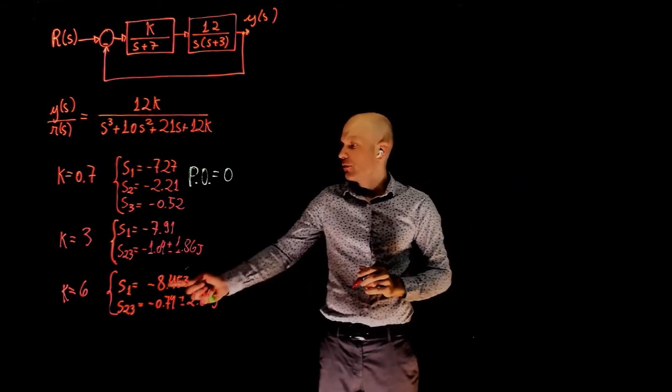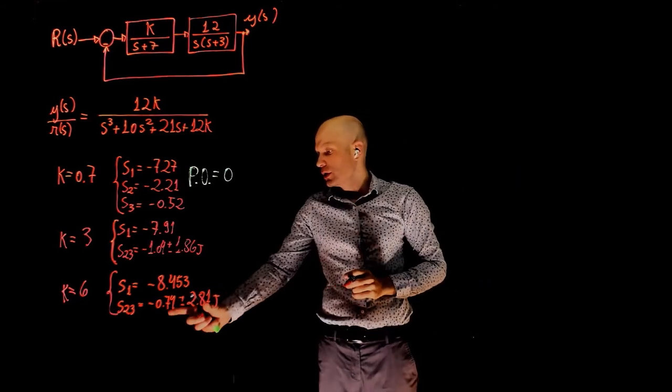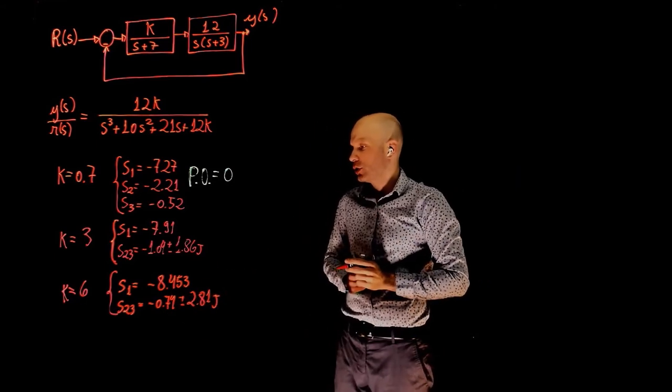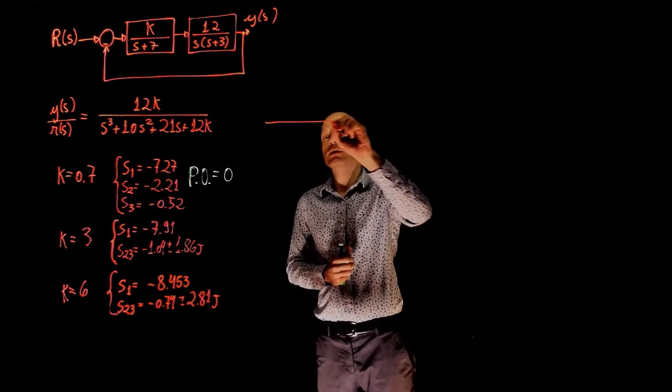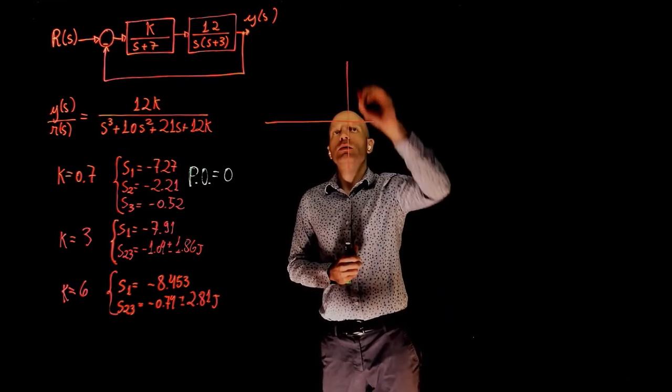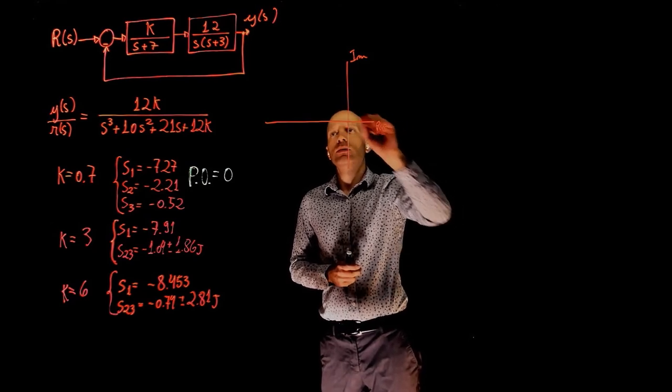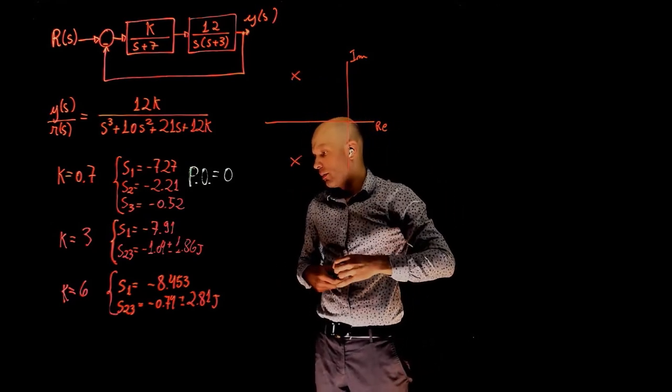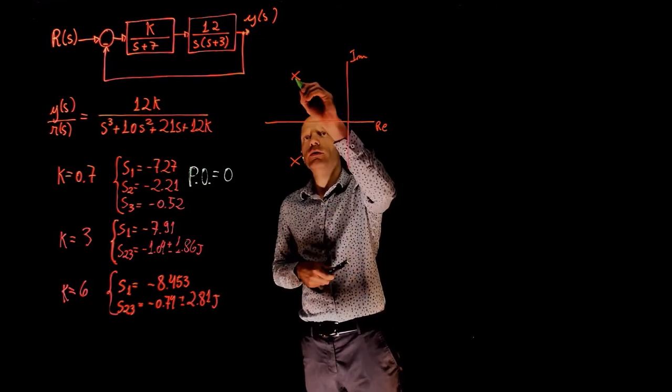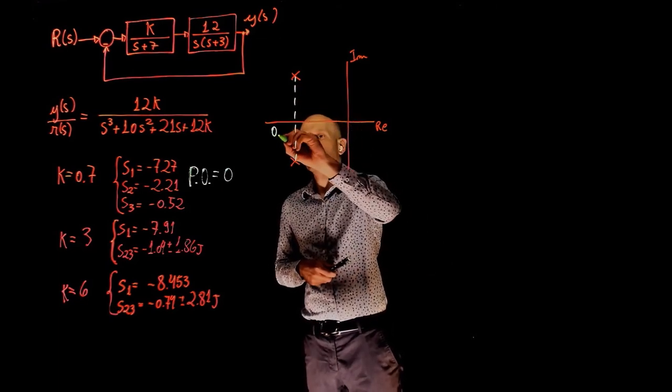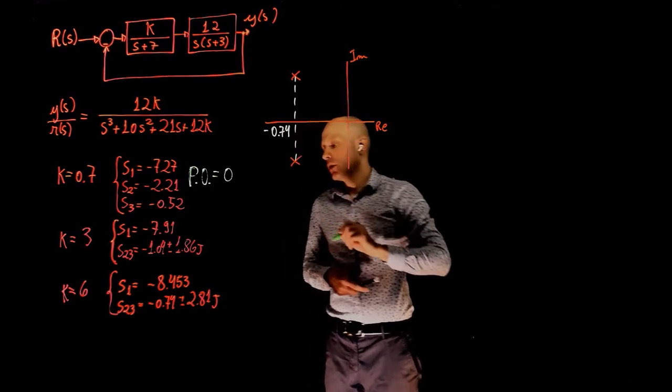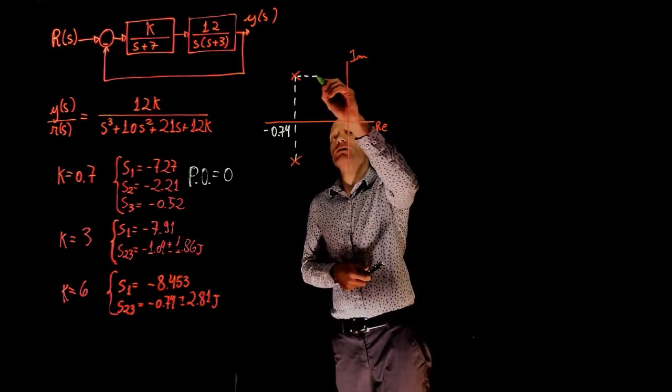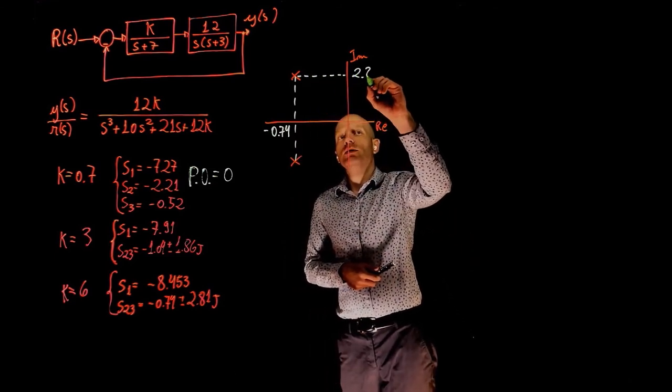Now let's repeat the problem for K equals 6. Again, we are considering only the complex conjugate poles. So let's plot them here, imaginary and the real axis. The real part this time is 0.74, and the imaginary part is plus minus 2.81j.